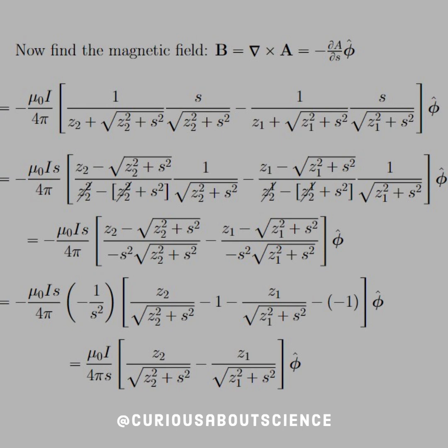We factor that out in the next line, and then we split up the fractions. We have z sub 2 minus square root z2 squared plus s squared, but that's the same as what's in the denominator, so it cancels to negative 1.